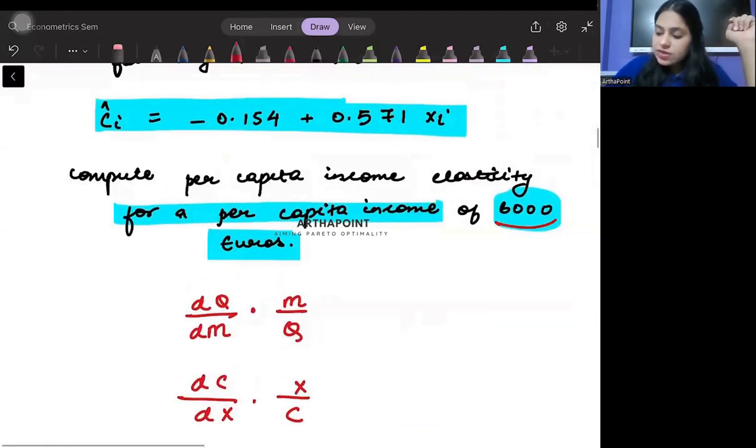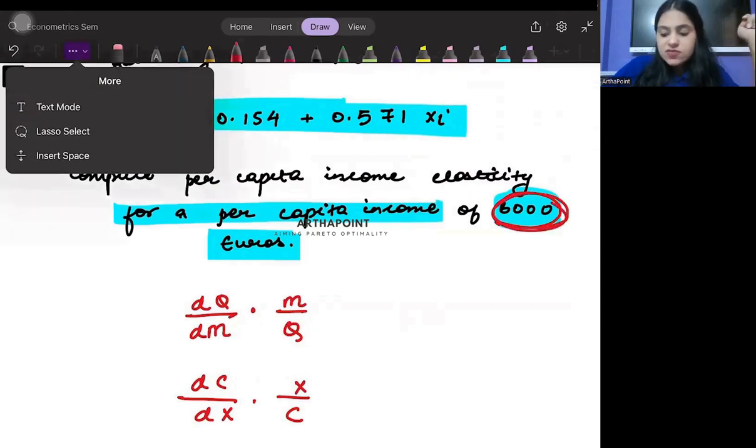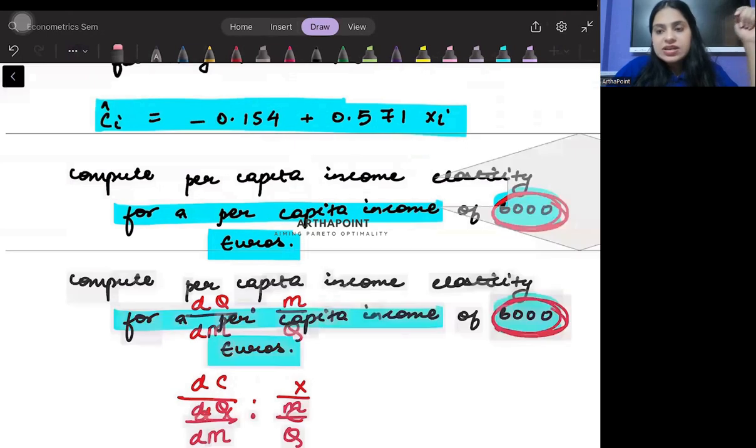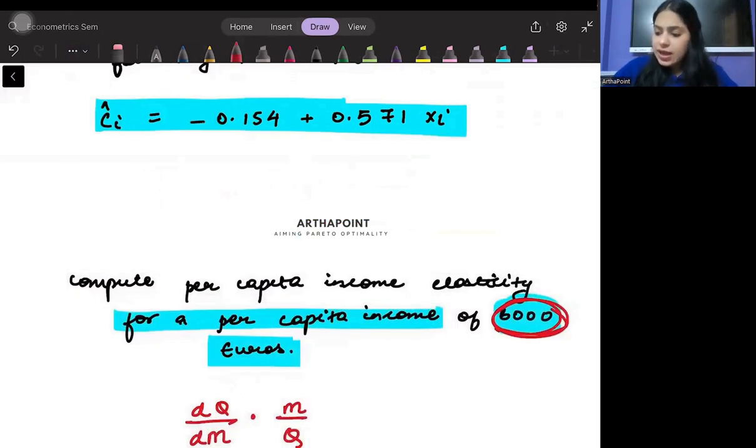Try to notice here that you are given that the value of the income is 6,000. First of all, let's try to find out what will be consumption if income is 6,000. So, I will go ahead and plug 6,000 here. I will get consumption is equal to minus 0.154 plus 0.571 into 6,000.